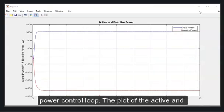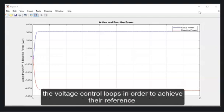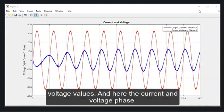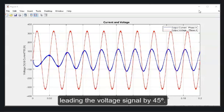The plot of the active and reactive power as a result of the signals generated by the voltage control loops in order to achieve the reference voltage values. And here, the current and voltage phase relation plot in phase A, which results in the current leading the voltage signal by 45 degrees.